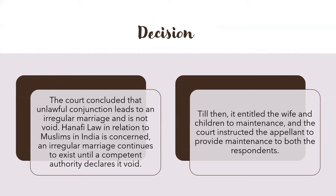The decision can be divided into four parts. In the trial court verdict: although Chand Patel denied any marriage taking place between the two, this contention did not go well with the trial court, which rejected his stance as prima facie evidence pointed otherwise. The court observed that Bismillah Begum was his wife and the minor girl was his daughter, and both were not being maintained by him. Hence, the trial court ordered Chand Patel to pay a monthly maintenance of Rs. 1000 to Bismillah Begum and their minor daughter until she reached adulthood.